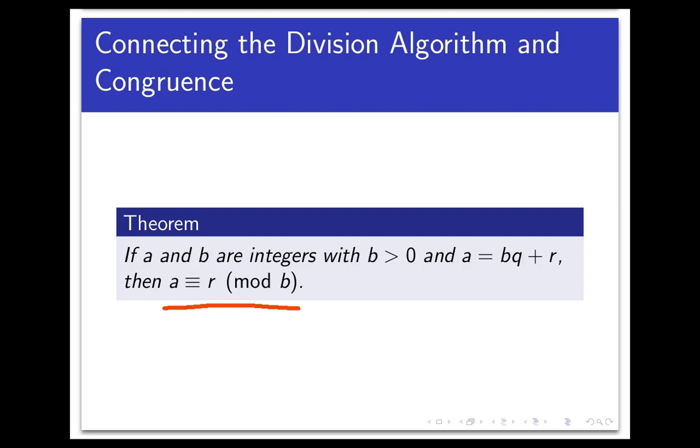But there's more. The division algorithm doesn't just give the existence of q and r. It says that if we require r to satisfy the inequality 0 less than or equal to r less than b, then those integers are unique. So in the division algorithm, the r is not just any old integer. It's the unique number within that range such that a equals bq plus r.